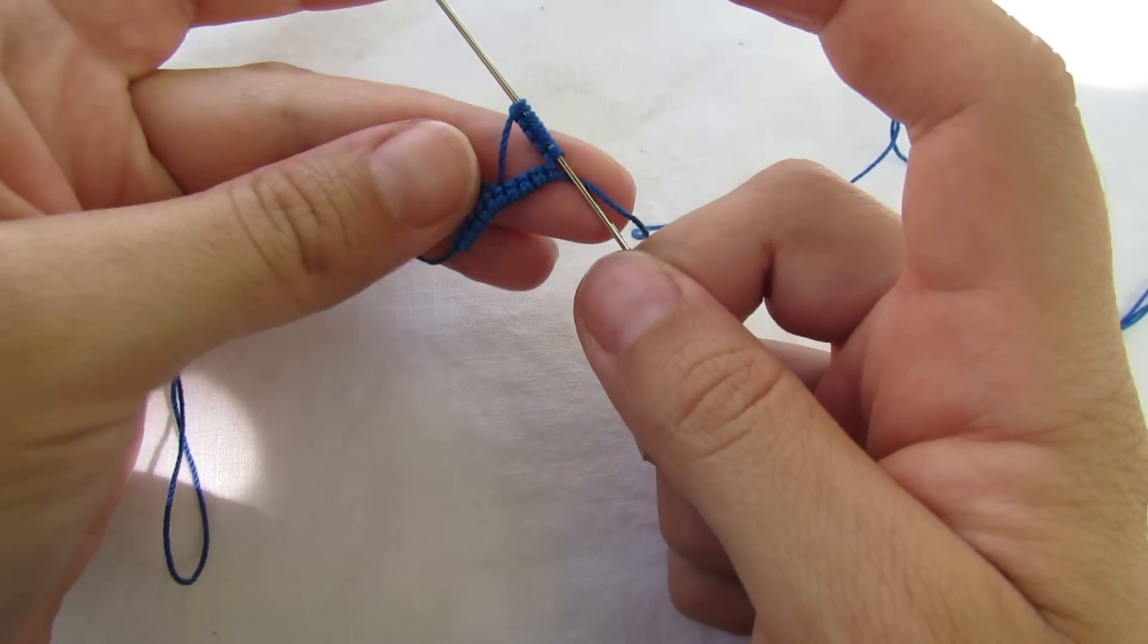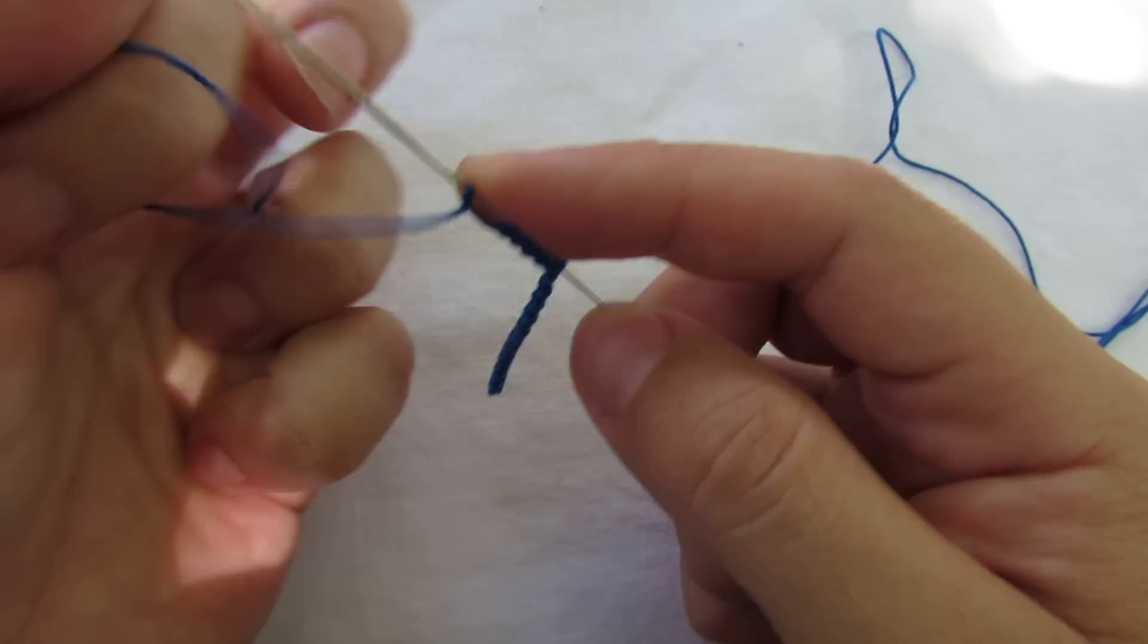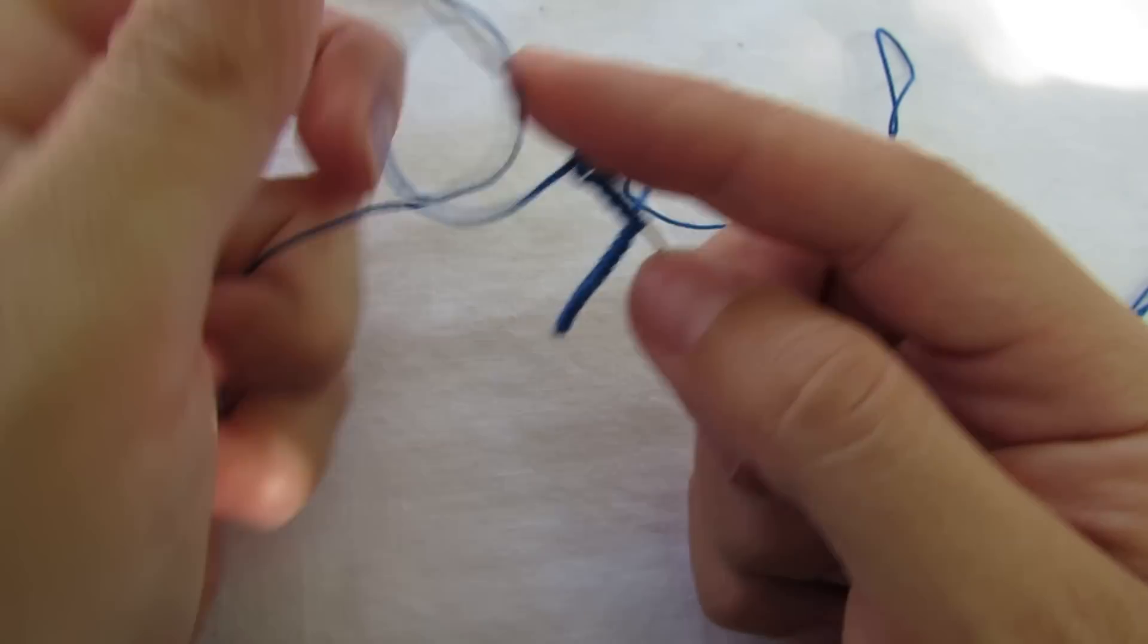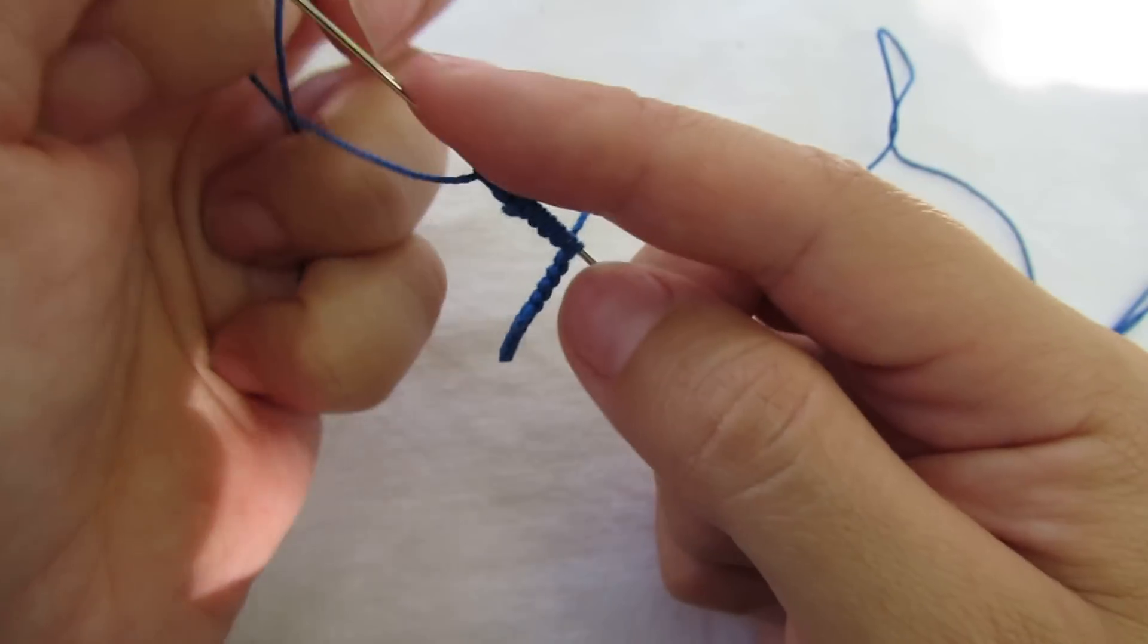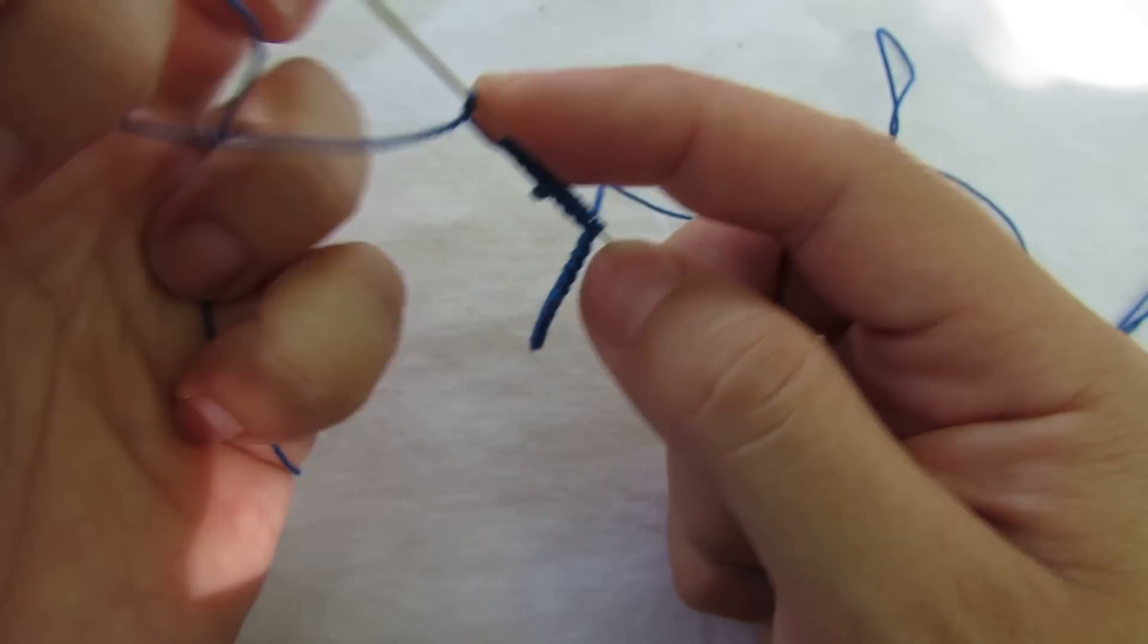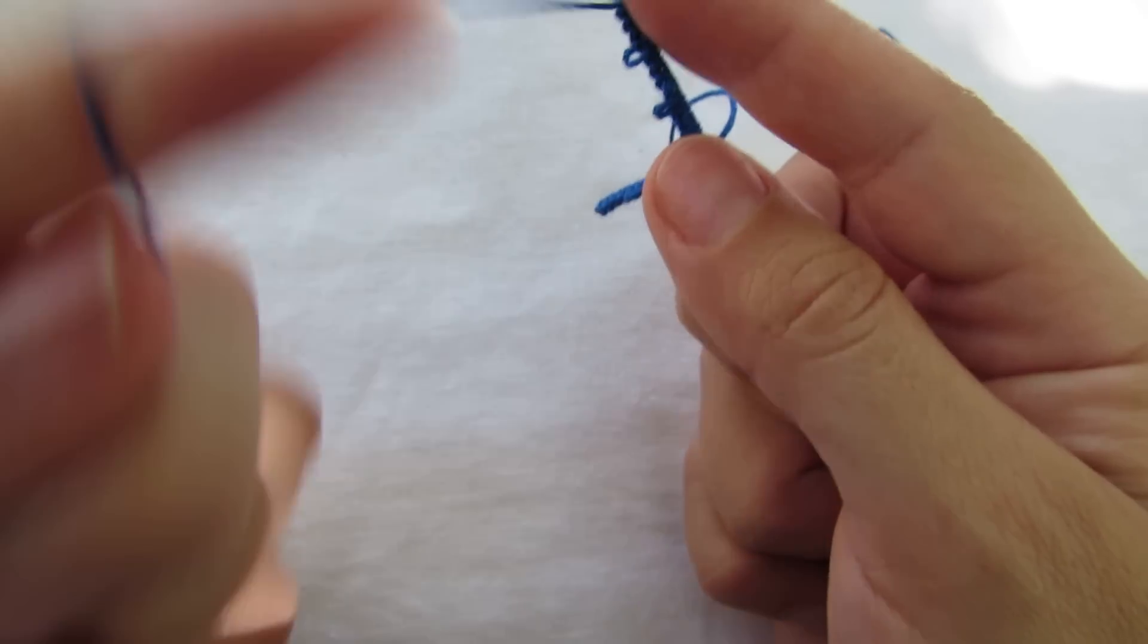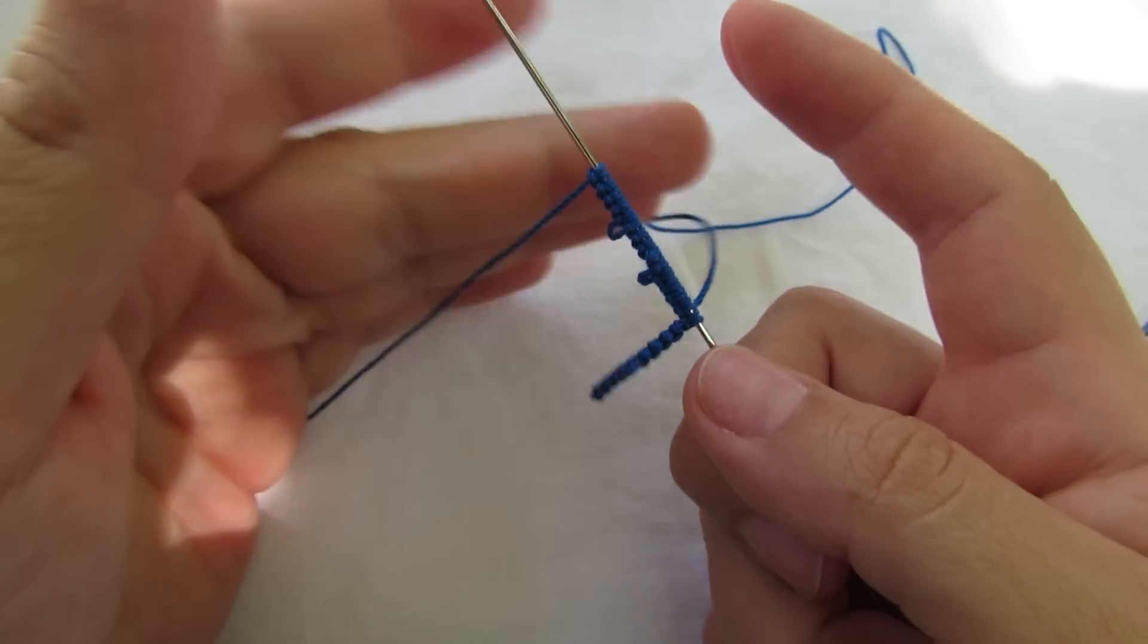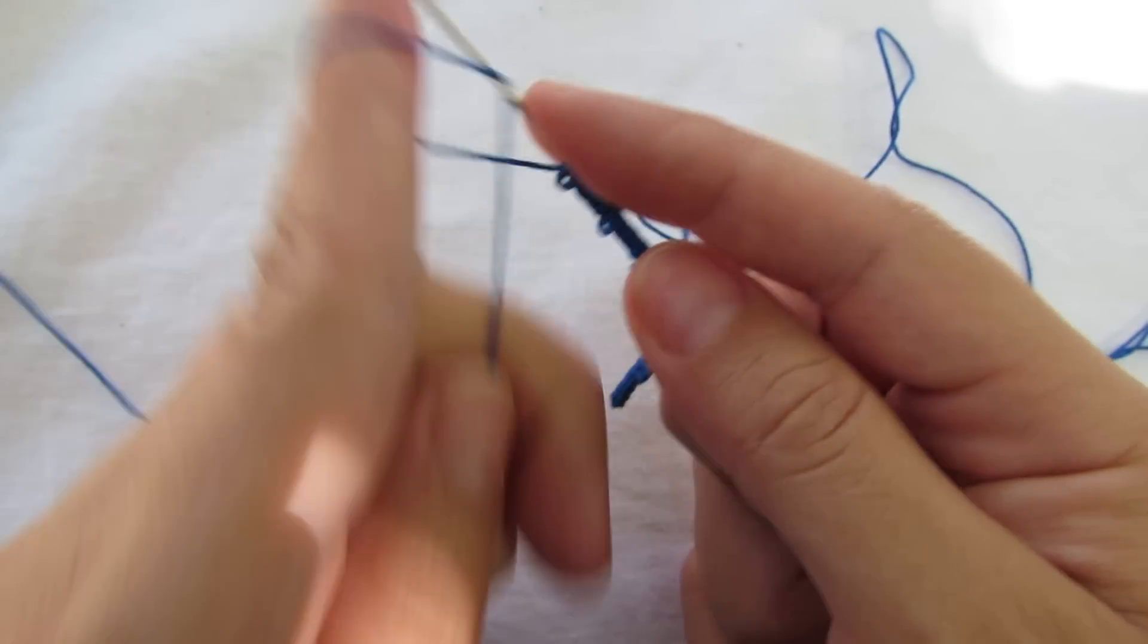So you're just doing it like regular tatting: picot, five double stitches, picot, five double stitches. Let's do one more picot and five more double stitches.